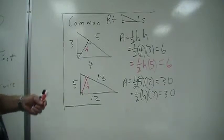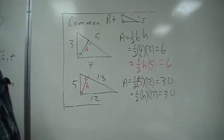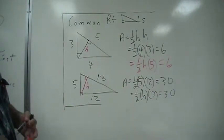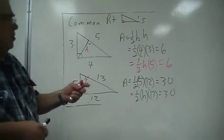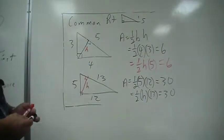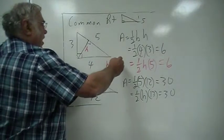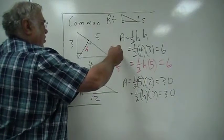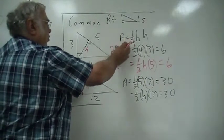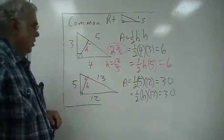And so since the area is the same triangle, the area is 6. So if you multiply both sides of this by 2 to get rid of that fraction, it would be 5H equals 12, or H equals 12 over 5, which is 2 and 2 fifths.